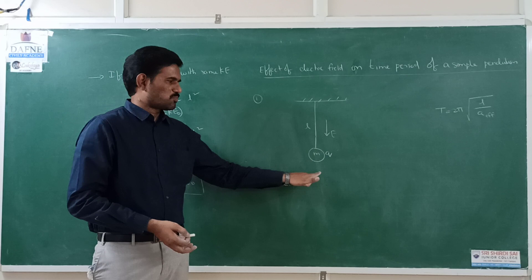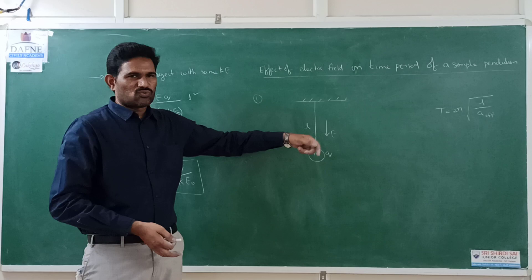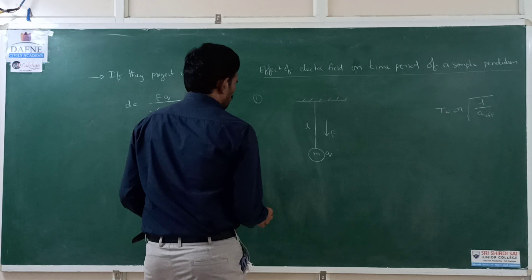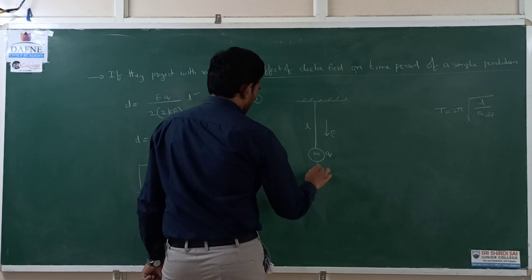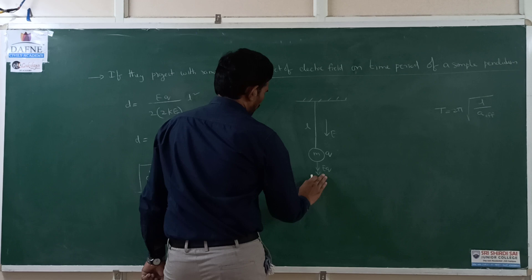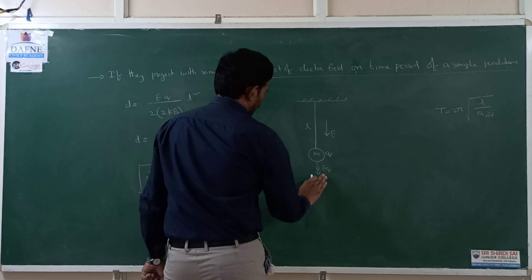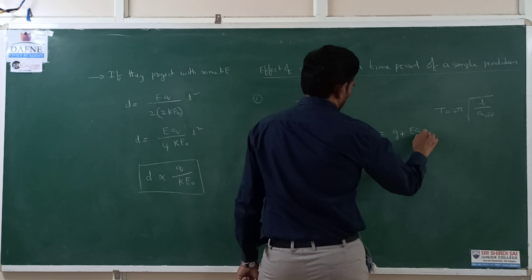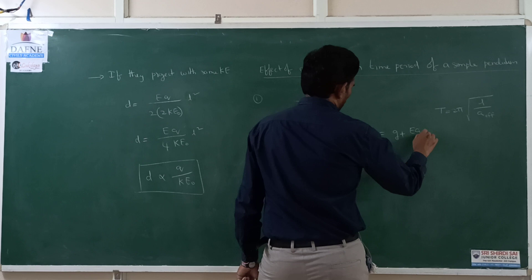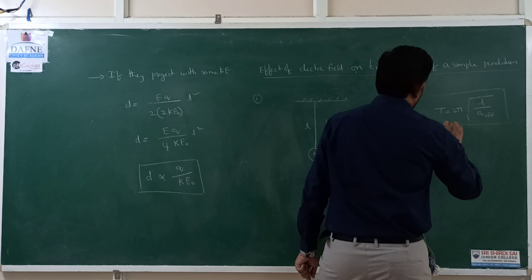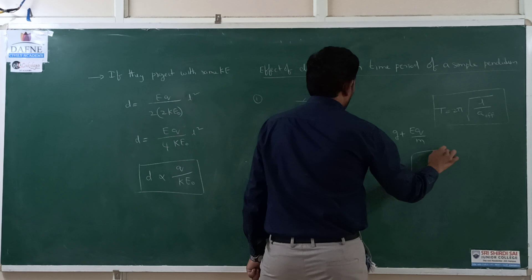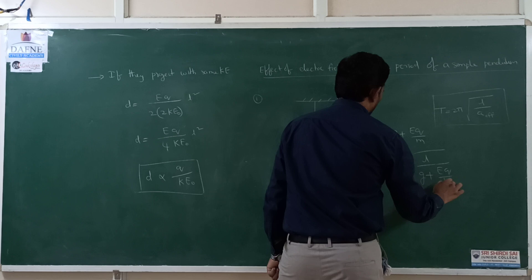The bob carries charge Q with the electric field directed downward. Due to gravity, force mg acts downward; due to the electric field, force EQ also acts downward. The net effective acceleration is g + EQ/m. Therefore, the time period is T = 2π√(L/(g + EQ/m)). The time period decreases compared to the uncharged case.